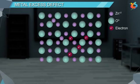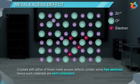Crystals with either of these metal excess defects contain some free electrons, hence such materials are semiconductors.